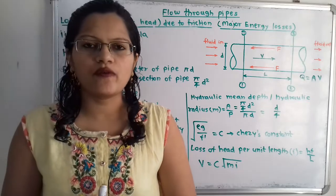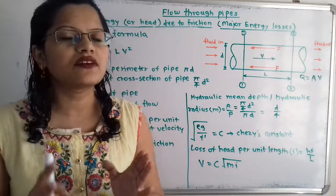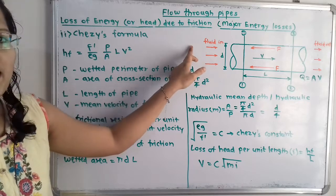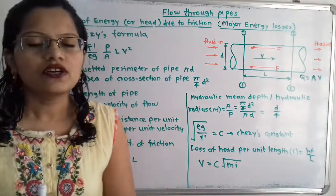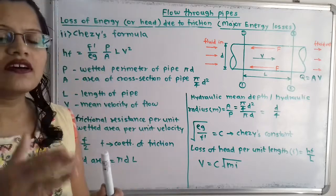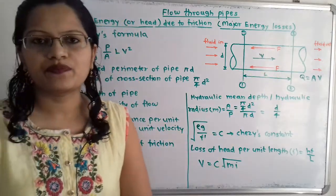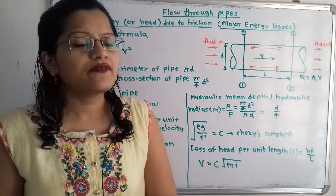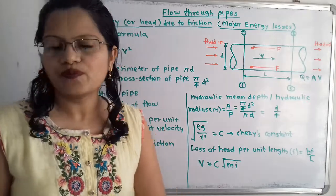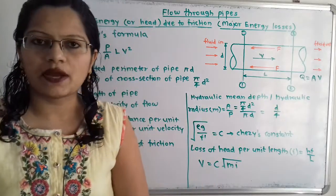This is the second type of formula. Now if we observe this diagram, there is a pipe having some fluid flow. The fluid is flowing from the left-hand side towards the right-hand side, so the direction of velocity V is in the direction of flow — towards the right-hand side. At the inlet, we consider section 1-1, and at the outlet, section 2-2. In between these two sections, there is the length of pipe, that is capital L.